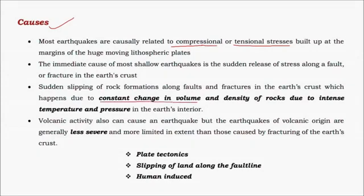There is a constant change in the volume and density of rocks below the earth's crust due to varying temperatures. This change in density below the crustal plates can result in subduction of regions in the earth's crust, also leading to earthquakes. Based on different causes, earthquakes can happen due to plate tectonics, sliding of land along a fault line, or human-induced activity.